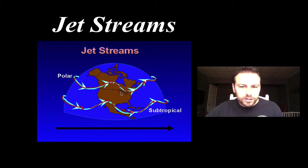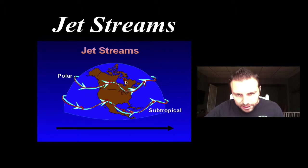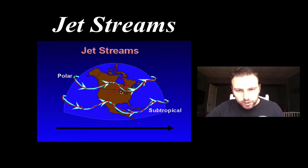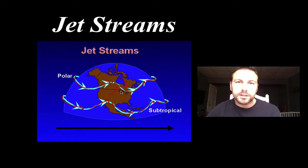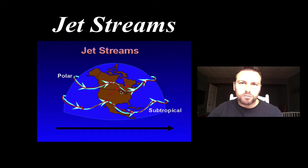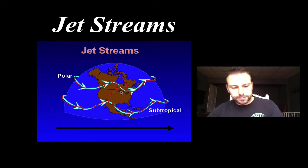Occasionally you'll hear, especially here in the northeast where we are, that the jet stream is dipping particularly south, or it might be going more northward in some areas. So there is some flexibility to it, and it does bend, but it runs from west to east across the United States for us.